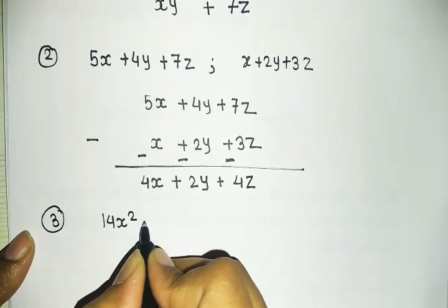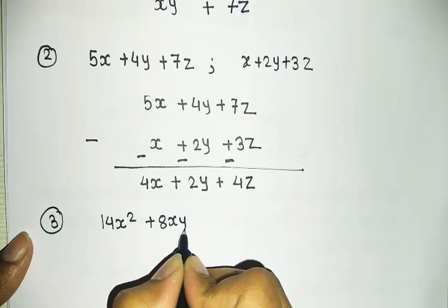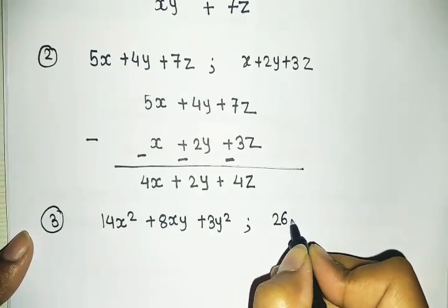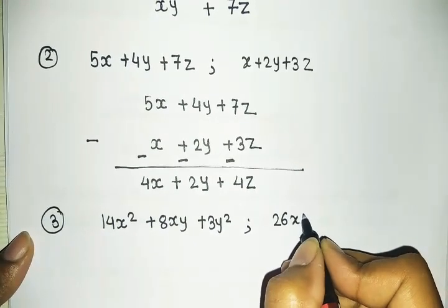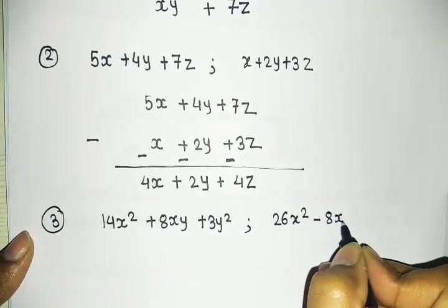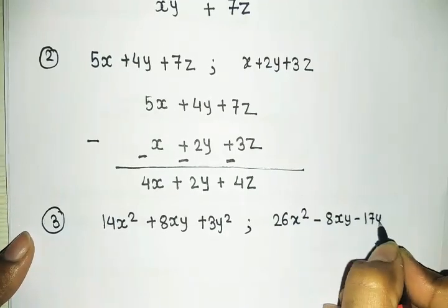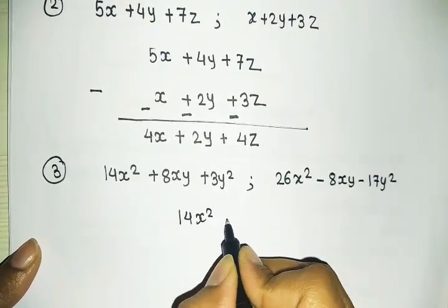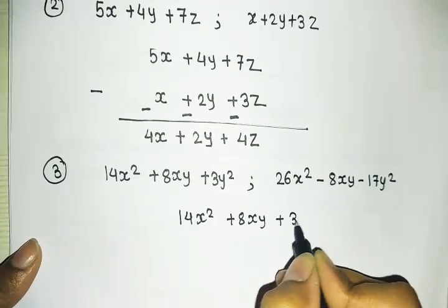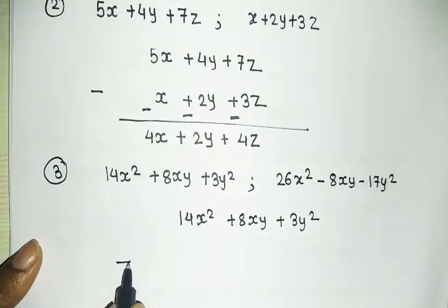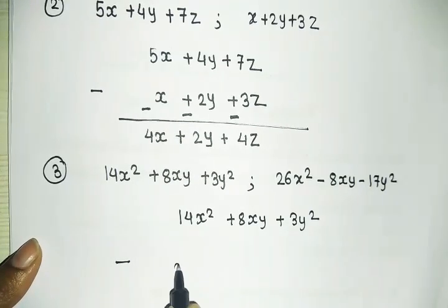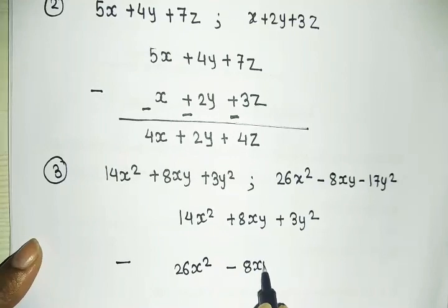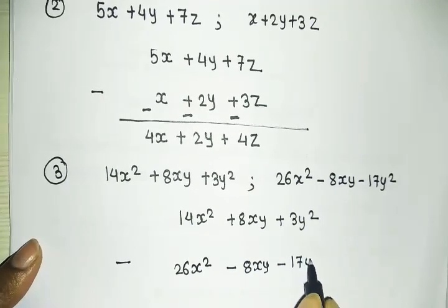Example number 3: the first expression is 14x² plus 8xy plus 3y². The second expression is 26x² minus 8xy minus 17y². We write the first expression and apply subtraction, placing the minus sign before the second expression: 26x² minus 8xy minus 17y².